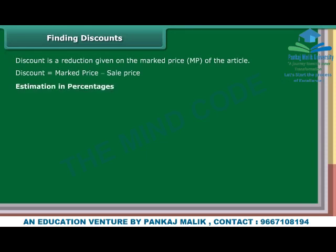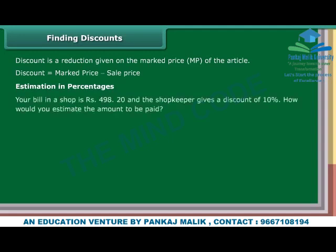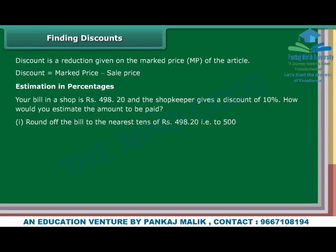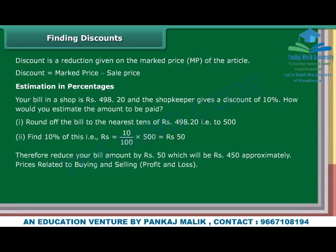Estimation in percentages. Your bill in a shop is Rs. 498.20 and the shopkeeper gives a discount of 10%. How would you estimate the amount to be paid? Step 1: Round off the bill to the nearest Rs. 500. Step 2: Find 10% of this, i.e. 10 upon 100 into 500, which equals Rs. 50. Therefore, reduce your bill amount by Rs. 50, which will be approximately Rs. 450.